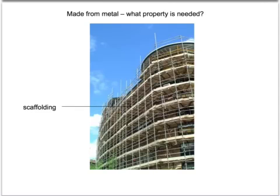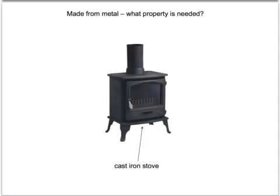Scaffold is made from steel. The property it would need would be to be very strong. And this stove is made from cast iron because cast iron has got a very high melting point and it's a conductor of heat.